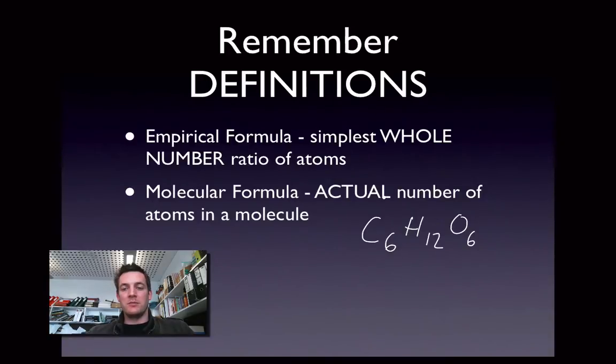If I give you an example of glucose, which is C6H12O6, that's not the simplest whole number ratio of atoms in that substance. In actual fact, if we wrote the simplest whole number ratio of atoms it would look like CH2O. So that's the empirical formula of glucose, but C6H12O6 is its molecular formula.